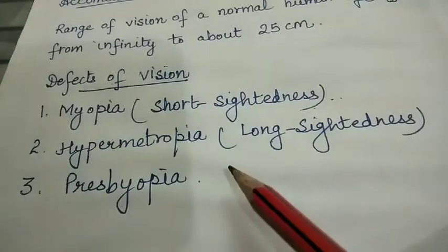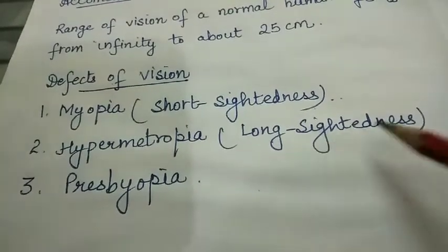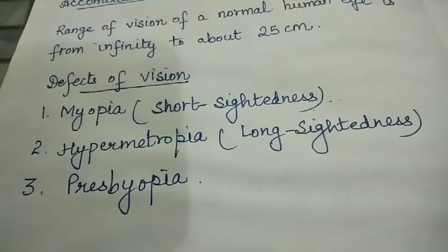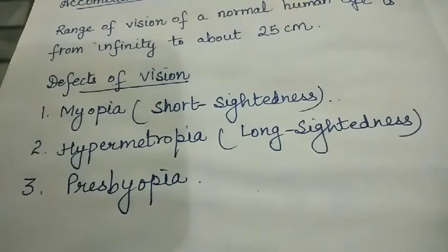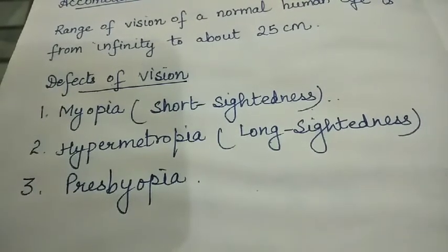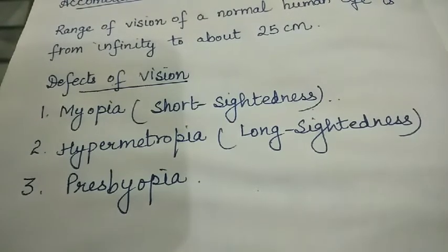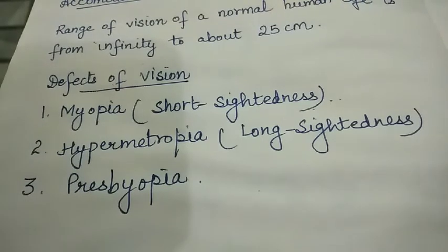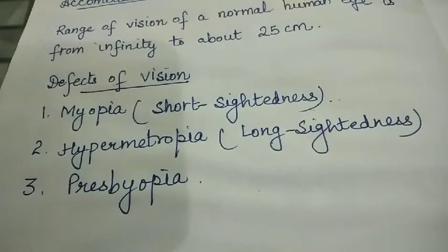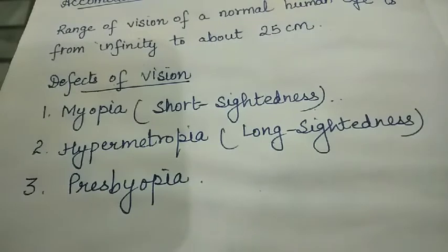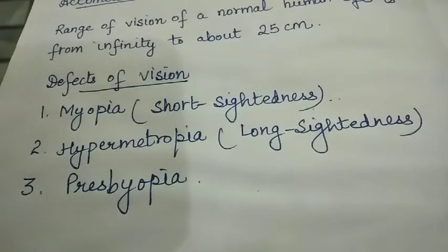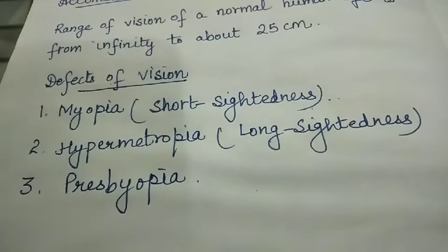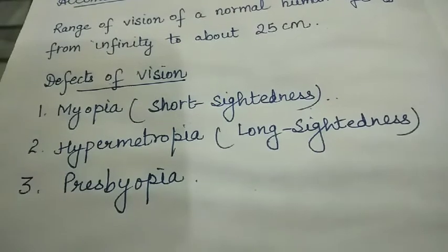Next defect of vision is hypermetropia, which means long-sightedness. A person having hypermetropia cannot see nearby objects clearly, although he can see distant objects clearly. For example, a person with hypermetropia cannot read a book clearly and comfortably, though he can read the number of a distant bus clearly. The near point of a hypermetropic eye is more than 25 cm away — such a person has to hold reading material at arm's length, much beyond 25 cm. This defect is caused due to low converging power of the eye lens or due to the short length of the eyeball.